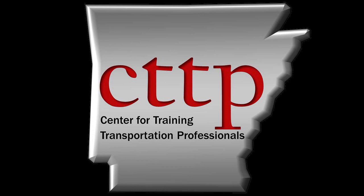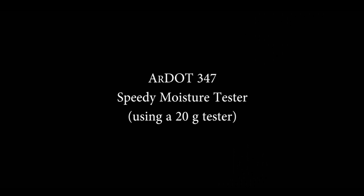Welcome to the CTTP training videos. RDOT Method 347, Determining Moisture Content by the Speedy Moisture Tester. In this video, the test for moisture content of a soil using a 20-gram Speedy Moisture Tester is demonstrated.